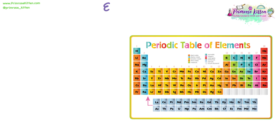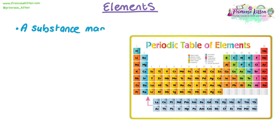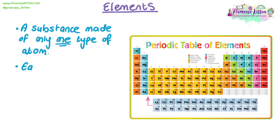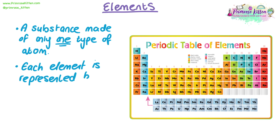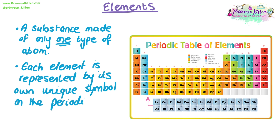We're going to start by looking at elements. An element is defined as a substance made of only one type of atom. This means that if we have a sample of an element, all the atoms in that sample will be identical. Each element is represented by its own unique symbol found on the periodic table, which is a comprehensive collection of all known elements, each with either a single letter or two letters.